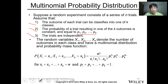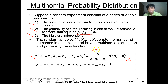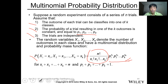Then random variables x1 to xk denote the number of outcomes in each class and have a multinomial distribution. The probability mass function for multiple variables — the probability that x1 equals x1 up to xk equals xk — is equal to n factorial over x1 factorial, x2 factorial, up to xk factorial, multiplied by the probability raised to the power of xi. The sum of x1 to xn equals n and the sum of probabilities equals 1.